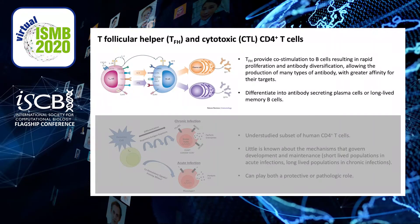First I'll talk about the T follicular helper clusters. TFH cells are the subset of CD4s that provide help to B cells, which are the antibody-producing cells in your body. They provide direct co-stimulation that results in proliferation and production of high affinity antibody through diversification. The co-stimulatory signals from TFH CD4s can also influence whether a B cell differentiates into a plasma cell that produces large quantities of antibodies or whether it becomes a long-lived memory B cell.